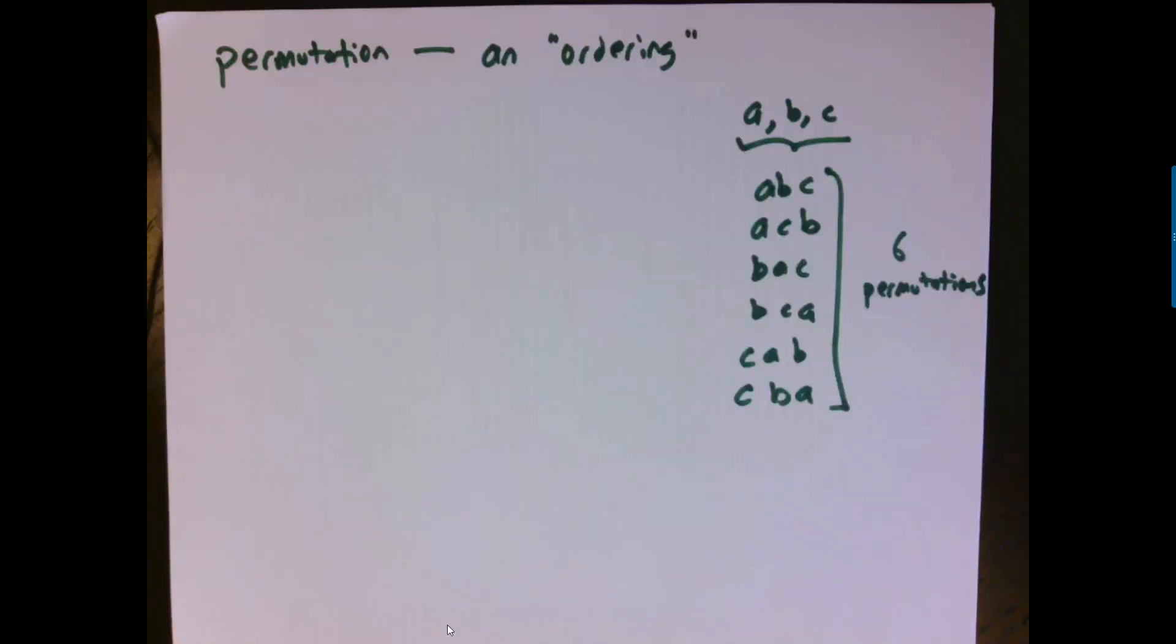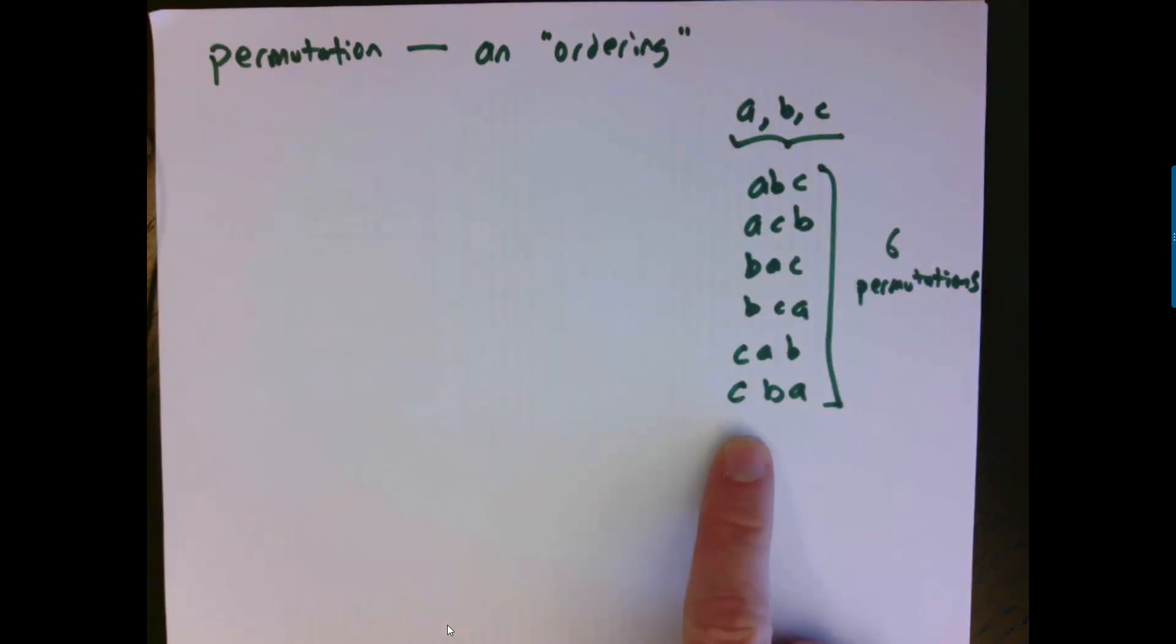The word permutation means an ordering of something. So if I have three things, here you see I've written down all the ways I could put those three things in order, and there are six of them. So we'd say there are six permutations.